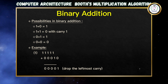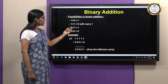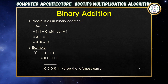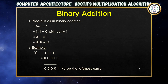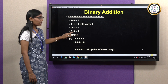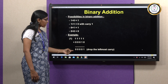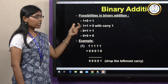For binary addition: 1+0=1, and 1+1=0 with carry 1. For example, adding two binary numbers: adding the bits column by column, 1+1 gives 0 with carry 1, carry 1+1 gives 0 with carry 1 again, and so on. The final leftmost carry is dropped. This is how binary addition is performed.